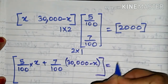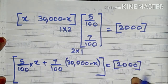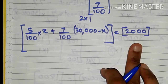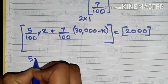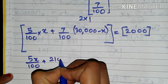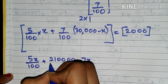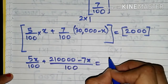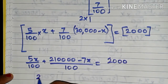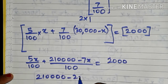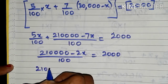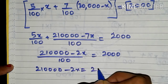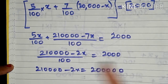This whole thing is equal to a 1 by 1 matrix which is 2,000. Since these two matrices are equal, the corresponding matrix elements are equal. We get 5x/100 plus 2,10,000/100 minus 7x/100 equal to 2,000 — very similar to part (a). Let us bring 100 to the other side.